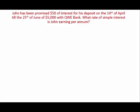Now let's go through a more interesting example. John has been promised $50 of interest for his deposit from the 14th of April to the 25th of June of $5,000 with QWE Bank. What rate of simple interest is John earning per annum? This is interesting because T is not given by month, week, or semi-annual — it's given in dates, so T must actually be calculated.